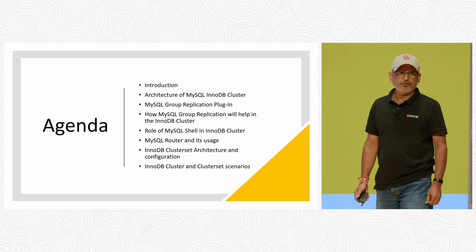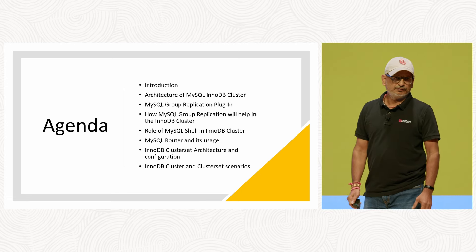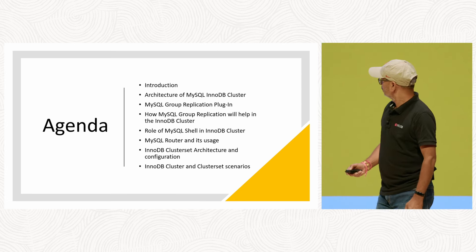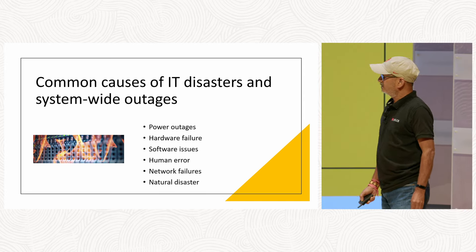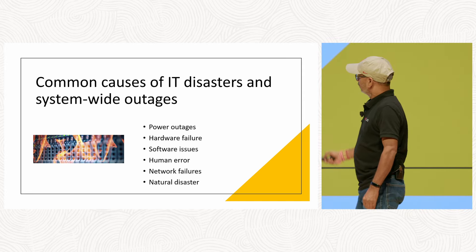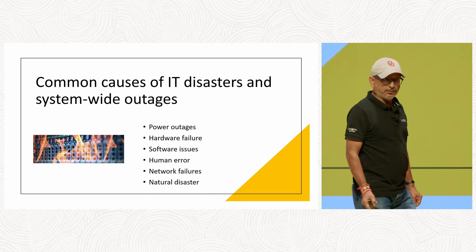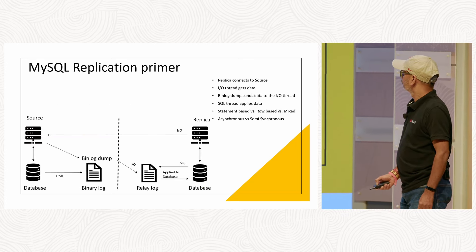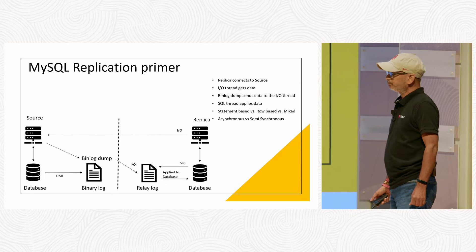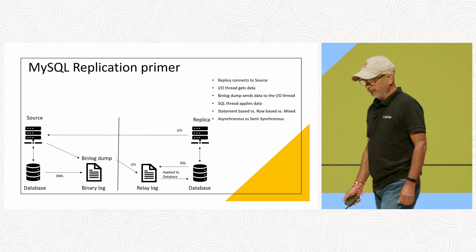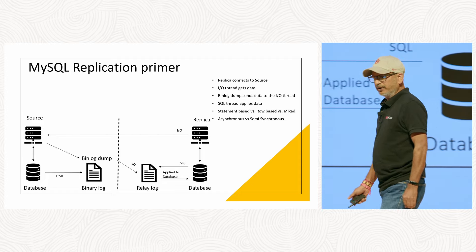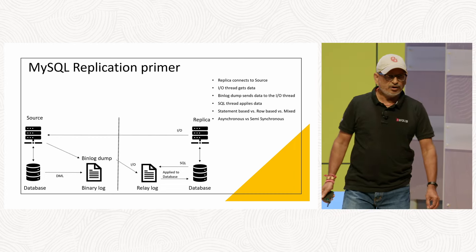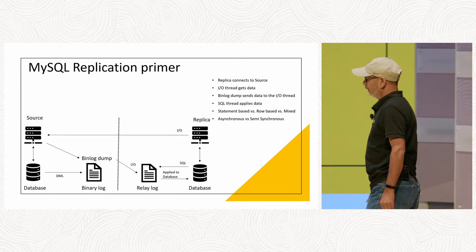Today we are going to talk about high availability with InnoDB Cluster as well as ClusterSet. It depends completely on group replication. We'll also cover common outages and how to overcome them on the MySQL platform using high availability. For basic replication, there are two types: binary log based and global transaction identifier. You also have the choice to set binary log format — whether it is statement-based, row-based, or mixed-based.